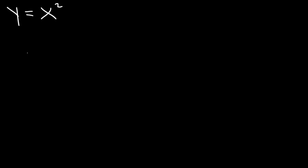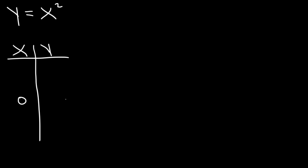Now let's talk about how to graph quadratic functions using a table. Let's start with y is equal to x squared. For this graph, we know that the vertex is going to be at 0 — it's centered at the origin. What you need to do is pick two points to the right of the vertex and two points to the left.